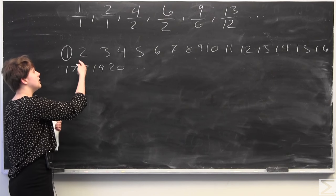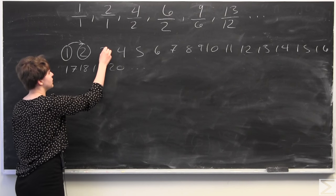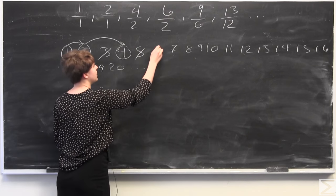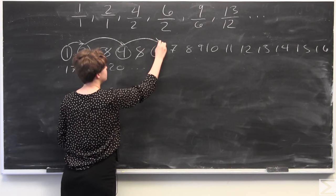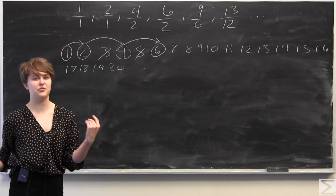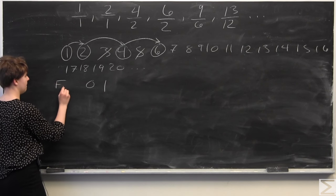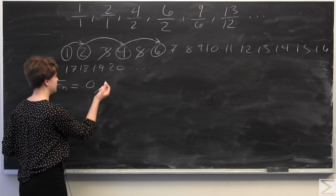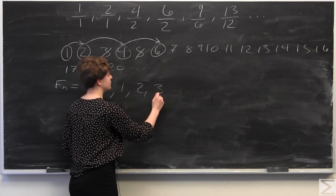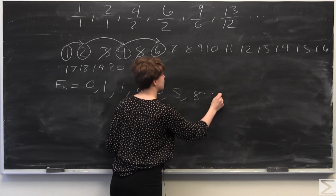We start with 1, then skip 0 numbers and go right to 2. Then we skip 1 number and go to 4, then skip 1 number and go to 6. This pattern may be familiar if you know the Fibonacci sequence, which starts with 0 and 1: 0, 1, then 0+1=1, 1+1=2, 1+2=3, 2+3=5, 3+5=8, and so on.